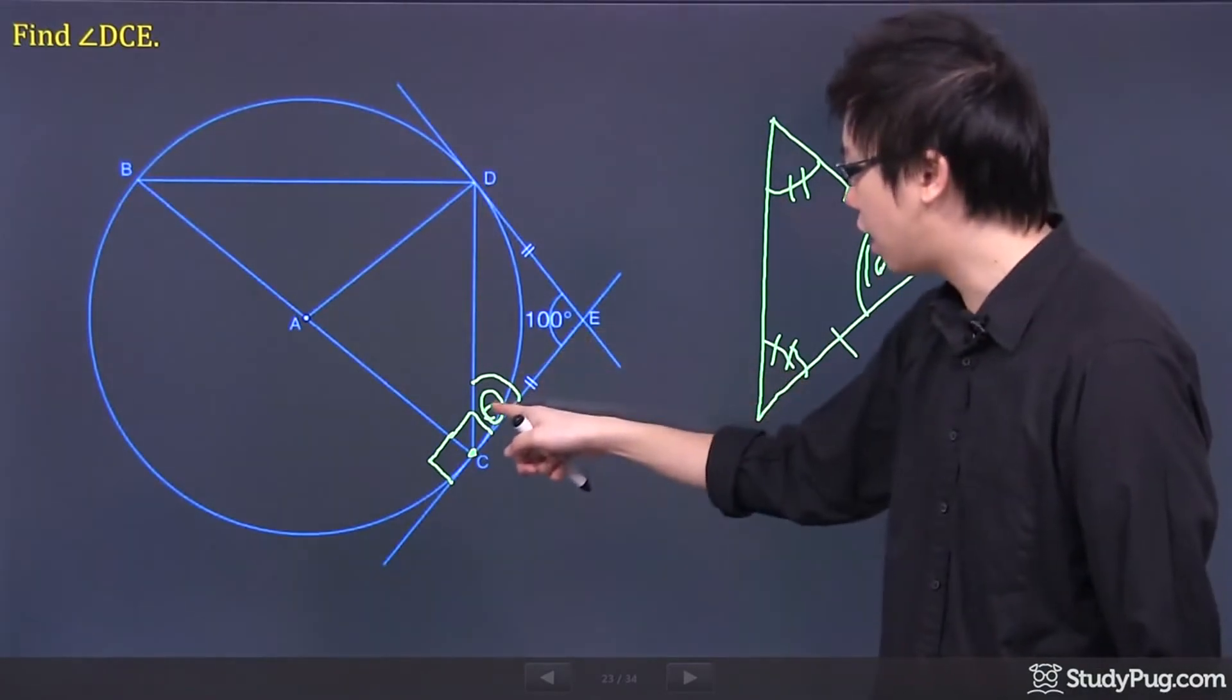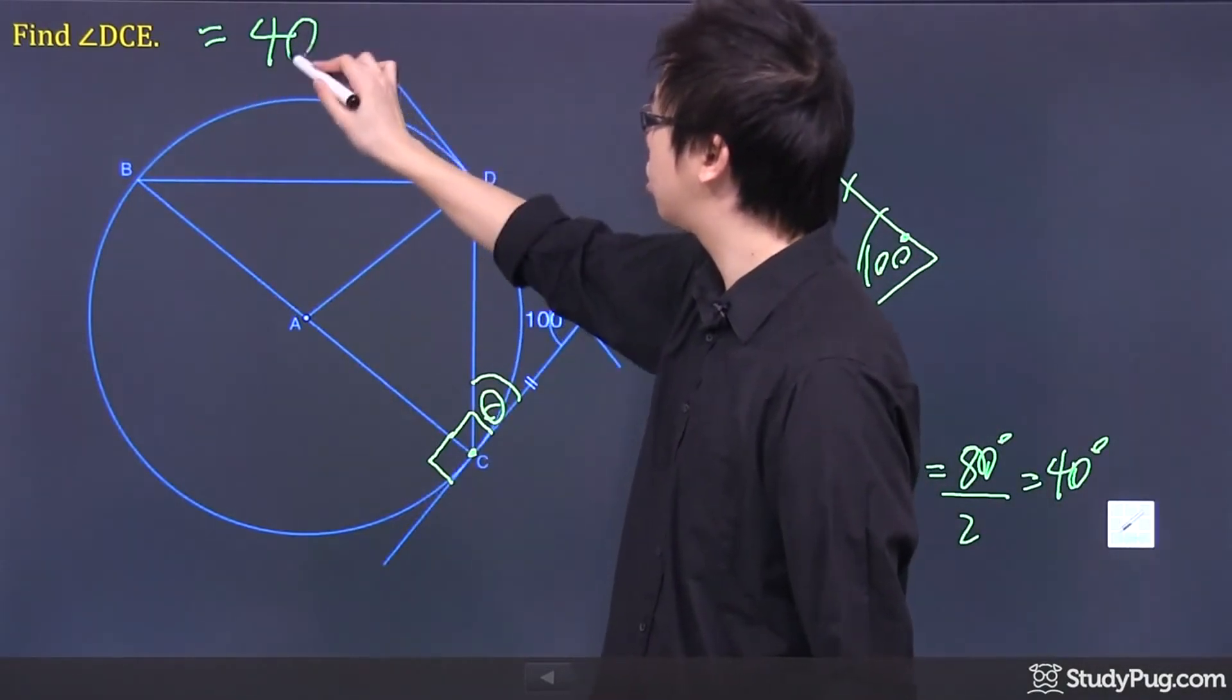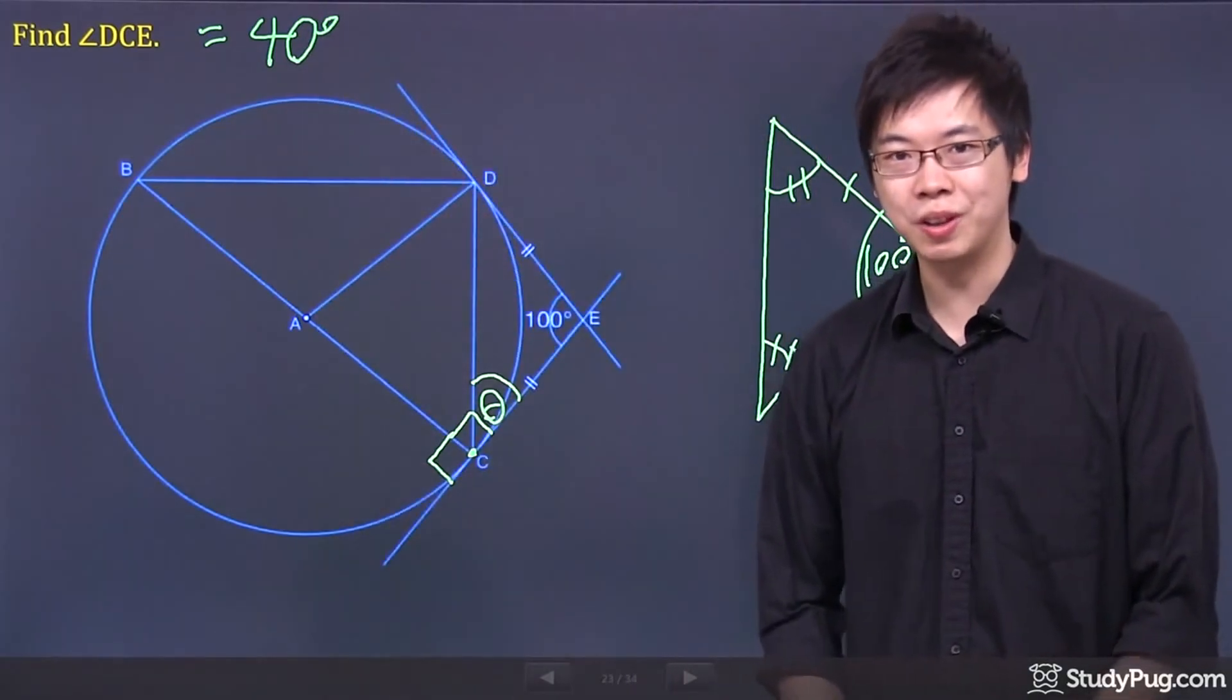And guess what? That is the angle that they're looking for. So the angle for this question, for DCE, is just 40 degrees. All right? Thanks for watching.